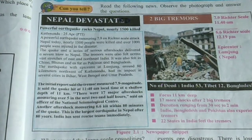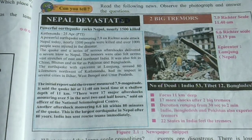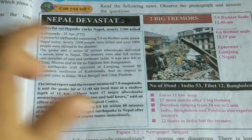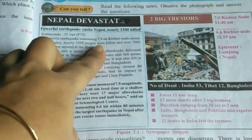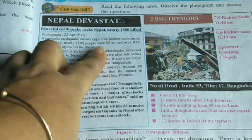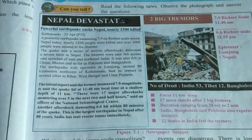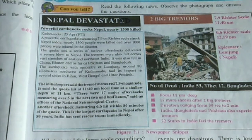Question: What caused the large-scale casualties? Answer: The calamities of the earthquake led to the large-scale casualties. Question 2: What was the magnitude of the earthquake? The magnitude of the earthquake was 7.9 on the Richter scale. Question: Which country was most affected by this earthquake? Nepal was the most affected country.